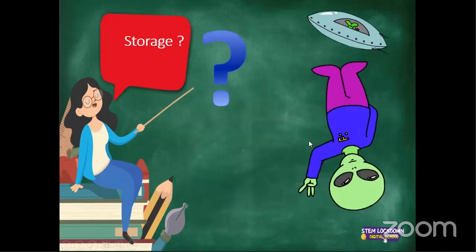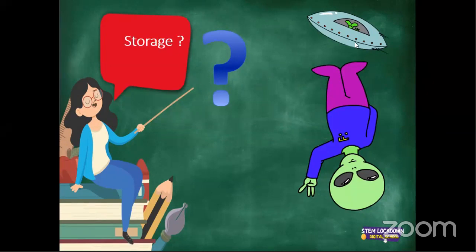Since I'm done with output devices — we know all these types of output devices so far. In general, an output device conveys the results to a user. For example, what you see right now on your screen is an end result. Your monitor is giving you the results. Now let me start talking about storage.